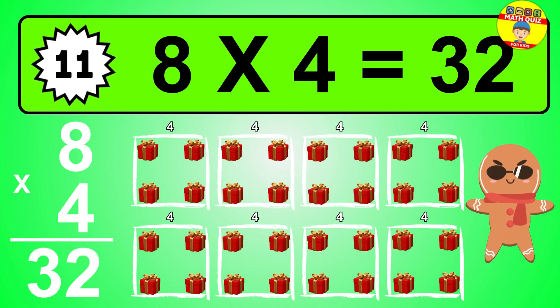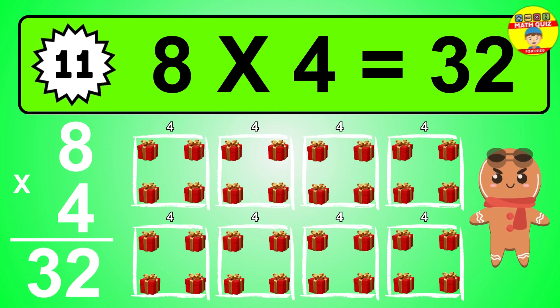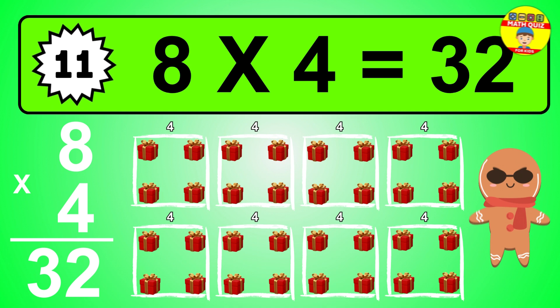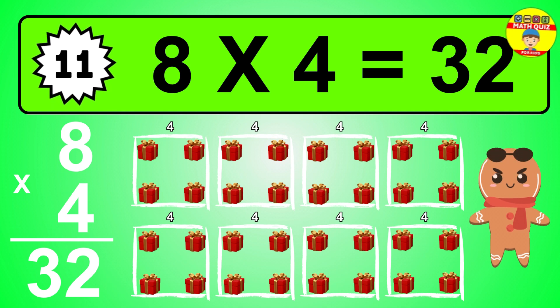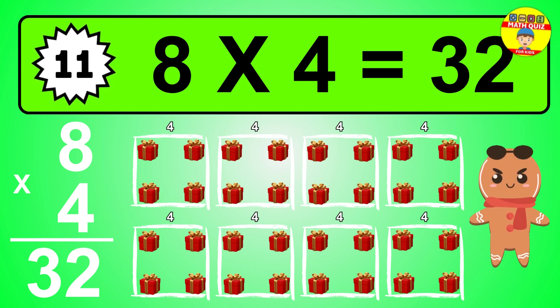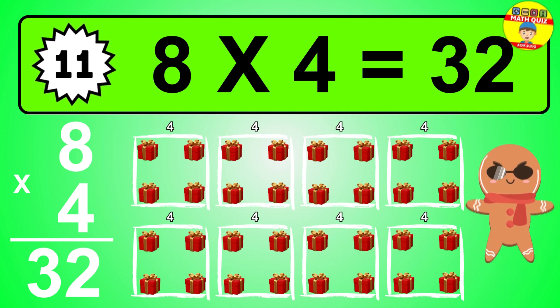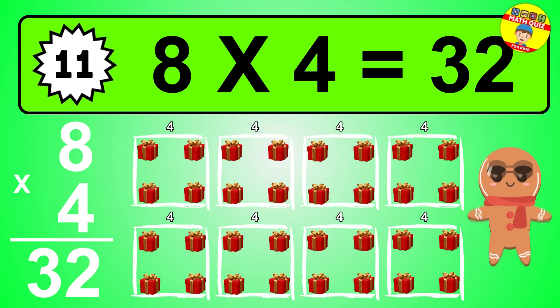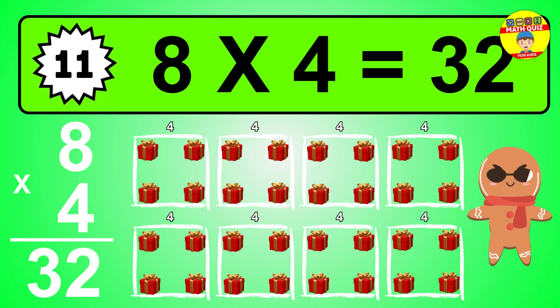The answer is eight times four is thirty-two. To calculate, we have eight groups with four balls each one. So how many balls do we have? Thirty-two balls.